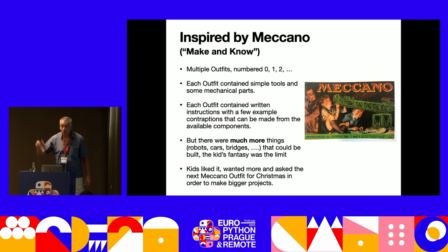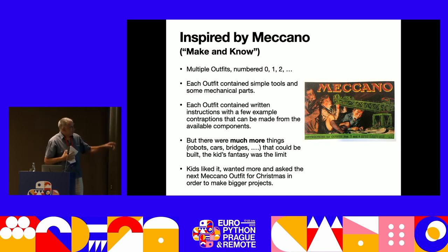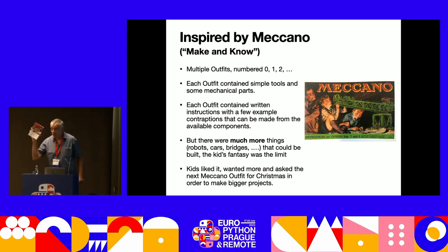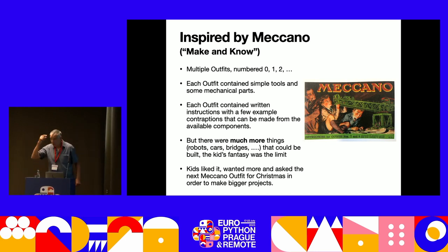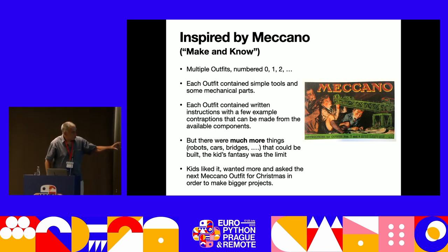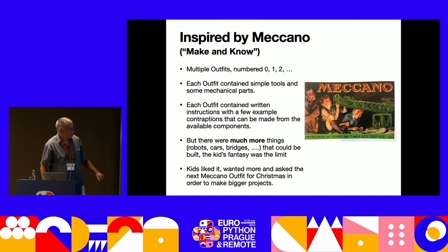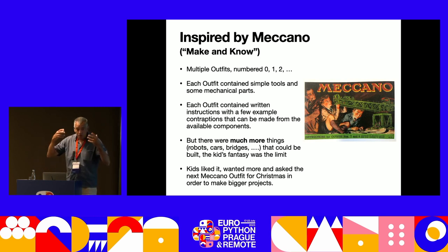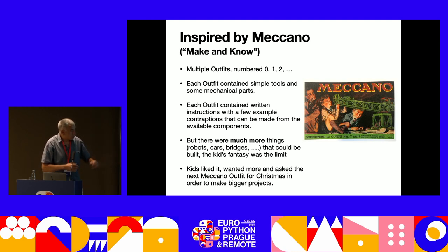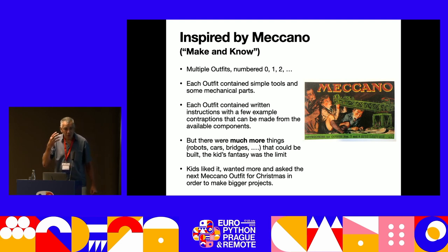We were inspired by Meccano. The name comes from 'Make and Know' — you can make mechanical stuff with Meccano, but you should also think about it because otherwise it collapses. They've got things they call outfits, numbered 0, 1, 2 — just like Python. Each outfit contains simple tools and some mechanical parts. Each outfit has a little booklet with some examples, but you can build much more than just the examples — it also stimulates creativity. Kids liked it and always wanted to learn more and get the next Meccano outfit for Christmas. Can we do something like this for software development?